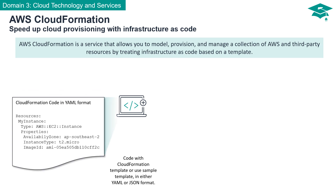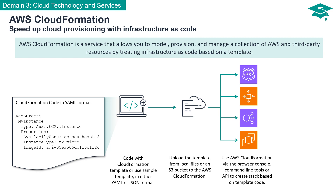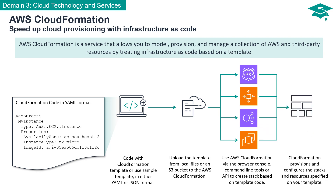Here's a glimpse of how simple it is to create an EC2 instance using CloudFormation. After coding your template, you can upload it from your local files or store it in an S3 bucket. Utilize AWS CloudFormation through the browser console, command line tools, or API to deploy your stack based on the template code. Once initiated, CloudFormation provisions and configures the stacks and resources specified in your template, ensuring consistent and reliable deployment while reducing the risk of errors.